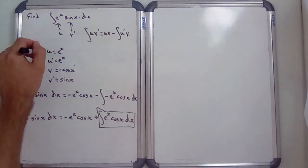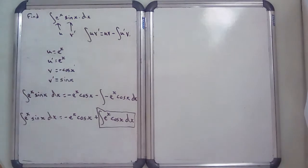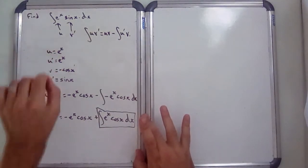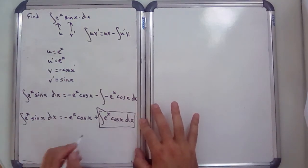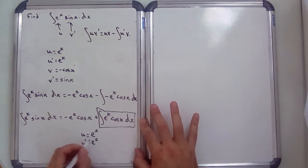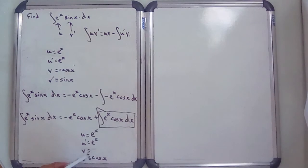A word of warning: when you do this with your u's and v's, you need to be consistent. My u's were the e^x parts before and the v's were the trig parts, so I'm not going to swap that around — that could have disastrous results. So for the integral of e^x cos(x): u = e^x, u' = e^x, v-dashed = cos(x), so v = sin(x), because sin(x) differentiates to cos(x).